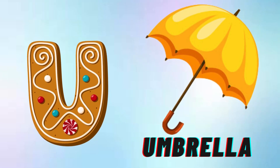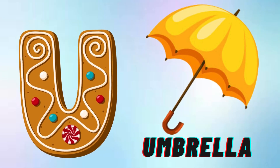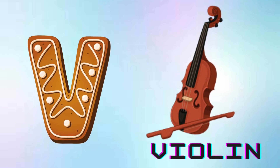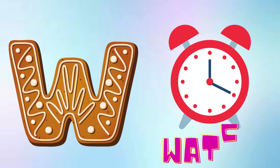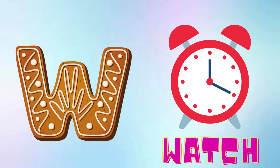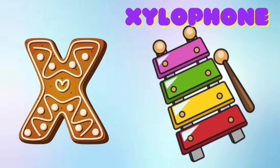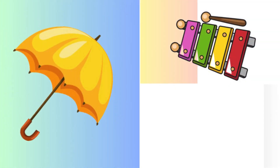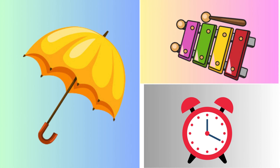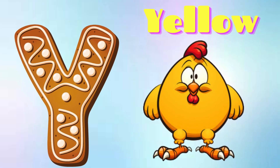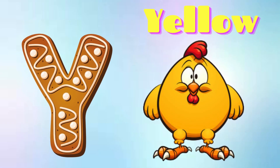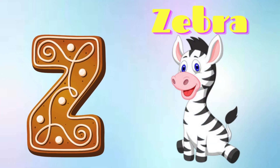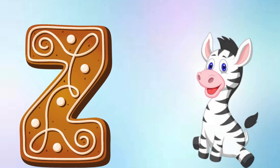U is for Umbrella, U-U-Umbrella. V is for Violin, V-V-Violin. W is for Watch, W-W-Watch. X is for Xylophone, X-X-Xylophone. Y is for Yellow, Y-Y-Yellow. Z is for Zebra, Z-Z-Zebra.